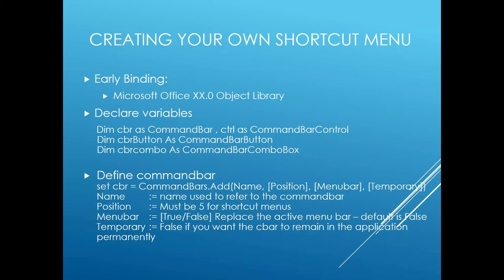Creating your shortcut menu: the easiest way to start is to set a reference to the Microsoft Office Object Library — that way you'll get IntelliSense as you type and work. You'll need to create command bar and command bar control variables. I rarely refer to a control specifically by its type, like command bar button or combo box, but if you do, you'll have the additional IntelliSense that goes with a button or a combo box.